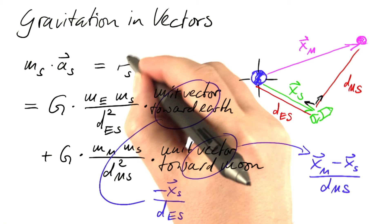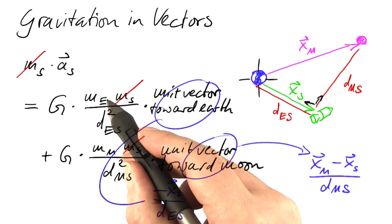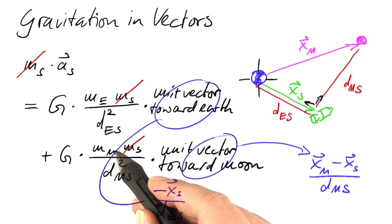Now let's forget about the force, then we see that the mass of the spacecraft cancels. What we need to know are the mass of the earth and the mass of the moon.